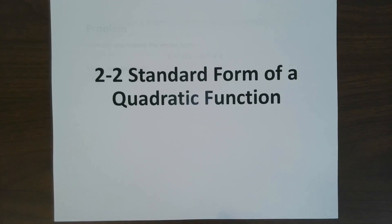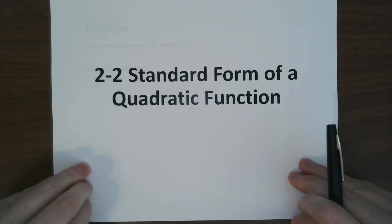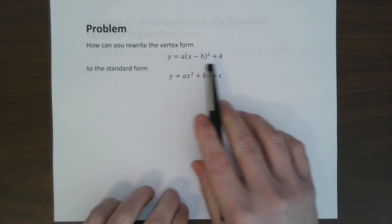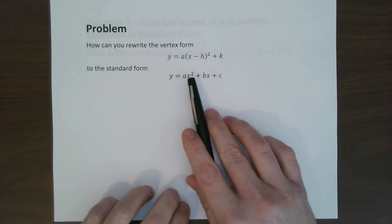Hi, today's lesson is on the standard form of a quadratic function. So here's a problem. We've already discussed this, which is the vertex form of the quadratic. How do we rewrite it in this form?